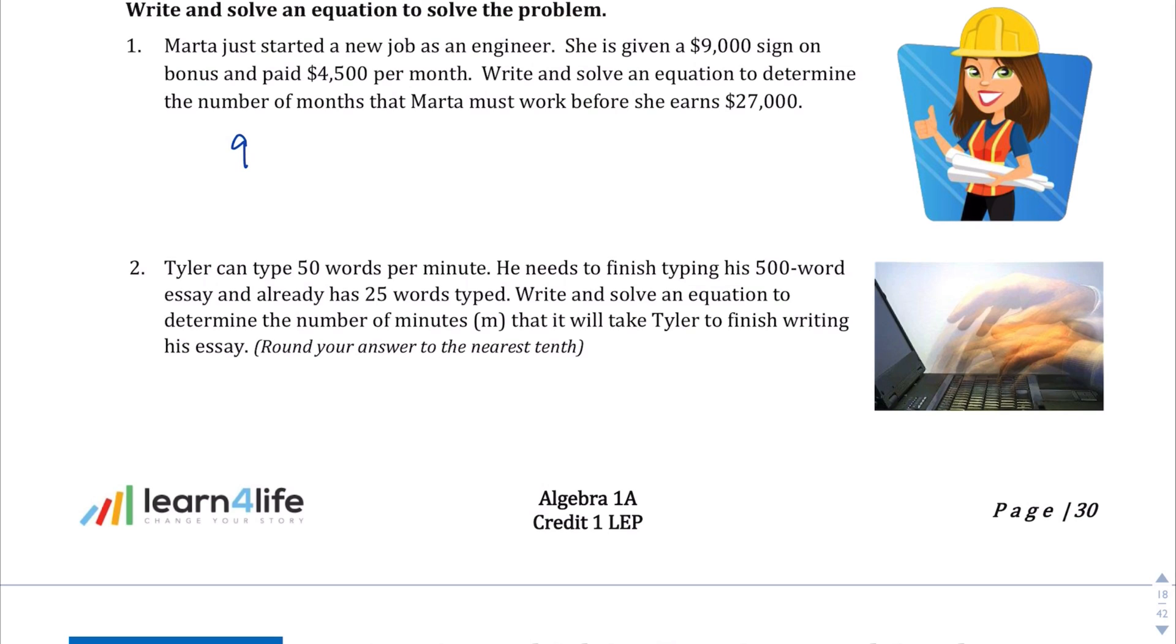So there's the sign-on bonus of $9,000 that we want to write down first. And then on top of that, she earns $4,500 for every month that she works. So I'm going to write X for that one. So depending on the number of months, which is X here, you multiply that with $4,500 to get how much money she earned for those months. And we want to know how many months does she have to work before she earns a grand total of $27,000. So this is our equation here.